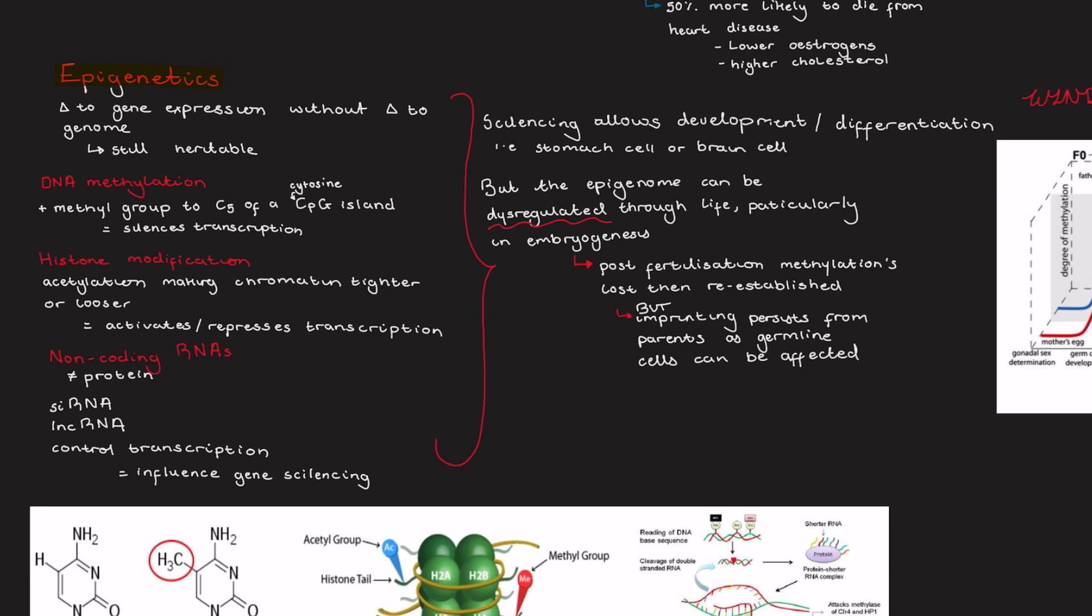There are three main types of epigenetic influences that we'll talk about. The first one being DNA methylation, which is key in silencing of transcription. And it involves a covalent transfer of a methyl group to the C5 position of a cytosine in a CPG island.